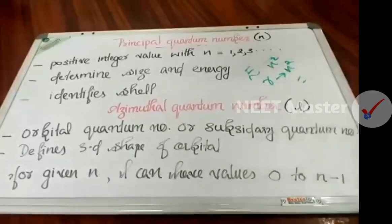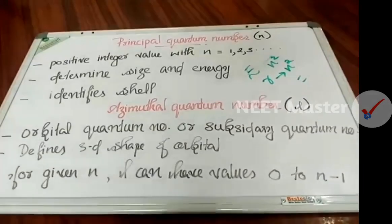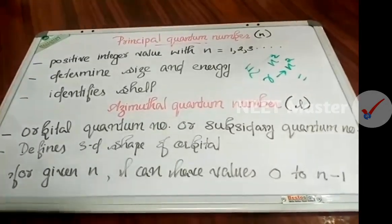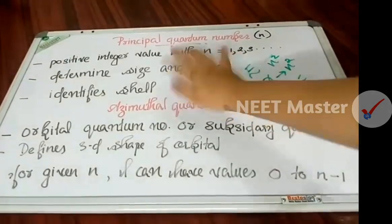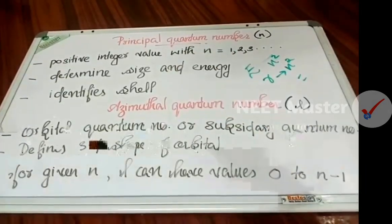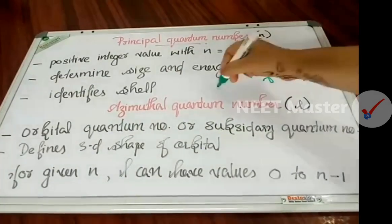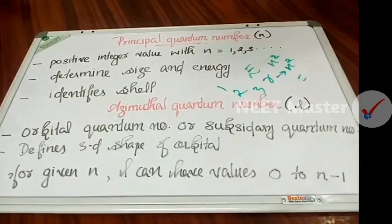We have already discussed the principal quantum number. We have to identify the shell. The first shell, principal quantum number is 1; second shell is 2; third shell is 3. It gives us a positive integer value.